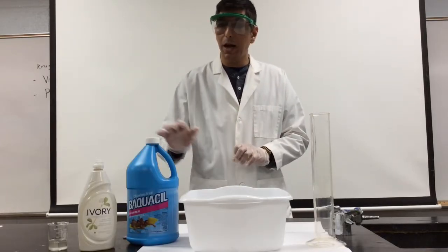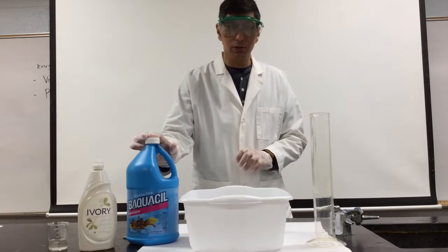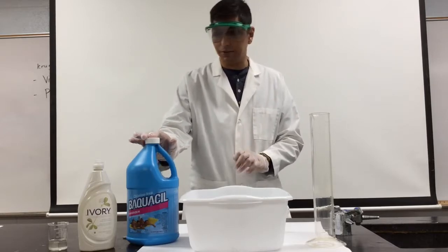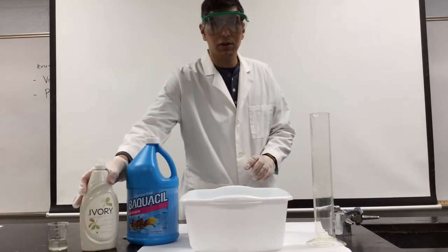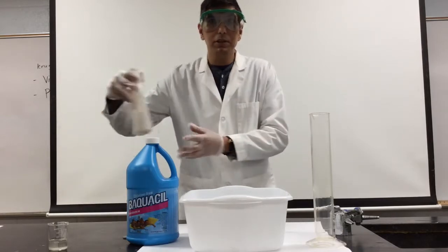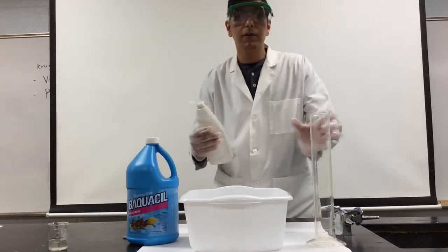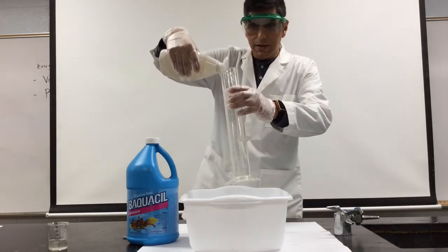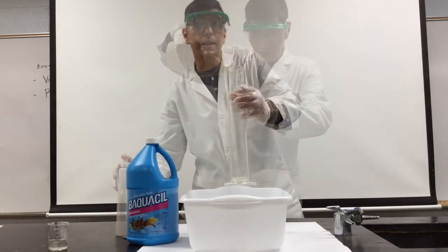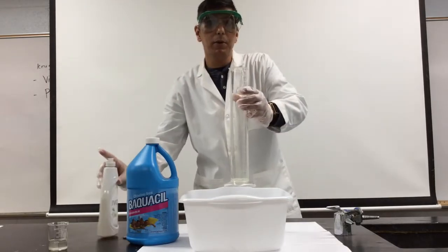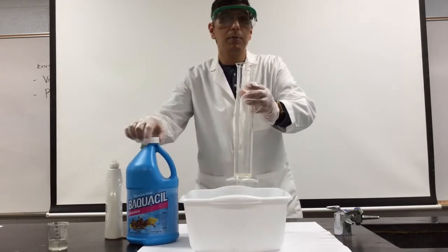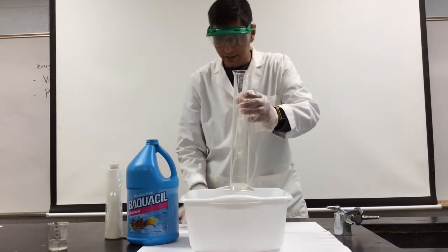By the way, I bought this at the pool supply store where it's sold as Baquacil pool oxidizer. Now, I'm going to start the reaction by putting some soap in the bottom of a graduated cylinder so we can see when the bubbles are produced. Next, I'm going to add about 200 milliliters of the Baquacil hydrogen peroxide.